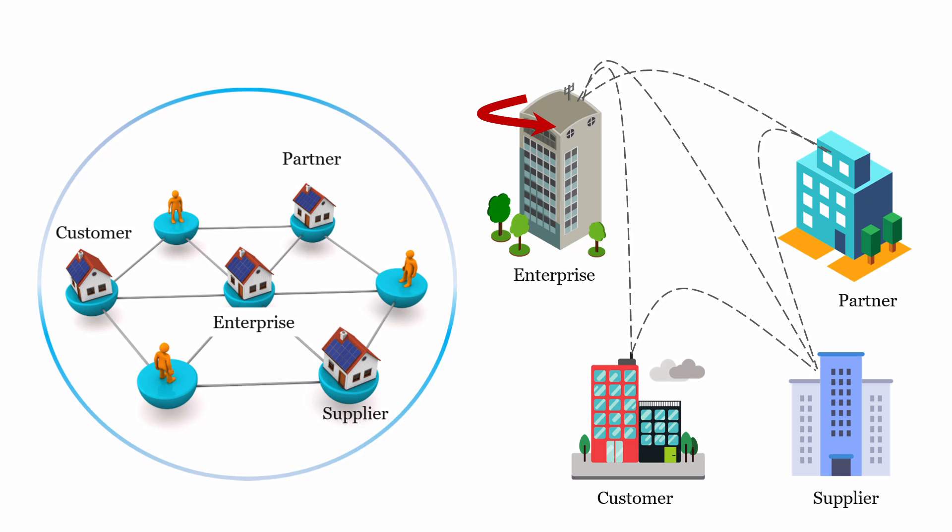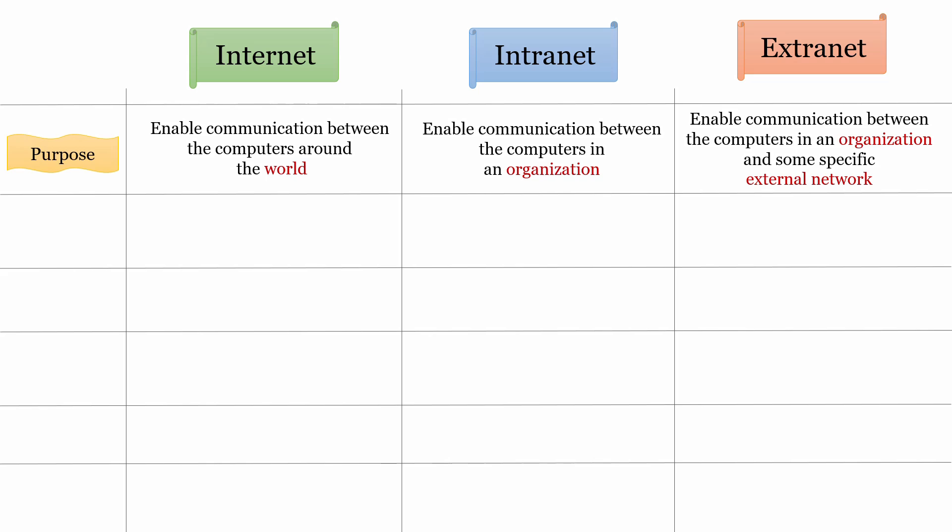Knowing internet, intranet and extranet in brief, now let us discuss the points on which they differ. If we talk about the purpose: as internet is a global network, it enables communication between computers around the world. As intranet is a private network designed for companies or organizations, it enables communication between computers within an organization or company only. An extranet is a private network that an organization, company, or enterprise shares with a third party such as suppliers, vendors, partners, customers, etc., thus enabling communication between computers in an organization and some specific external networks.